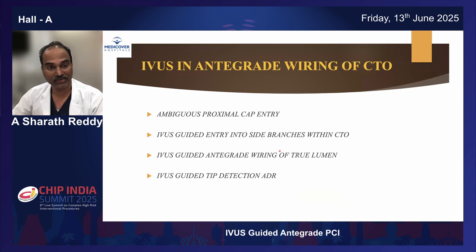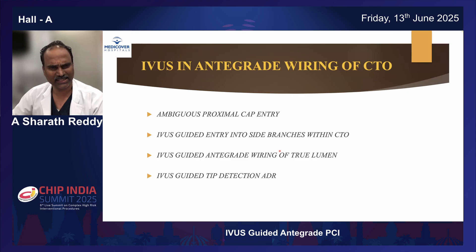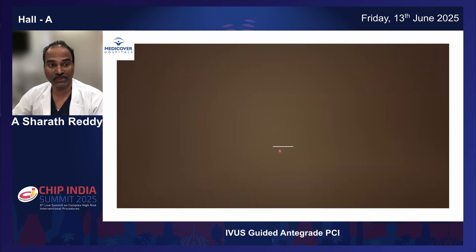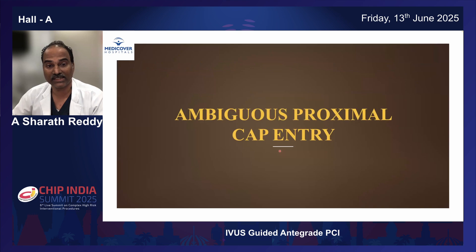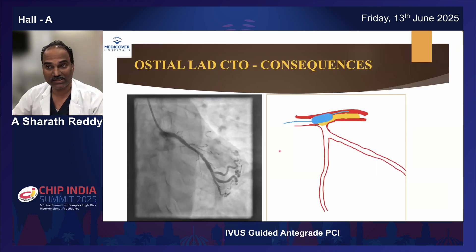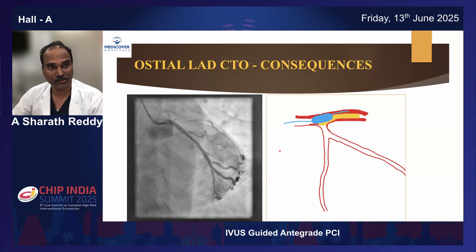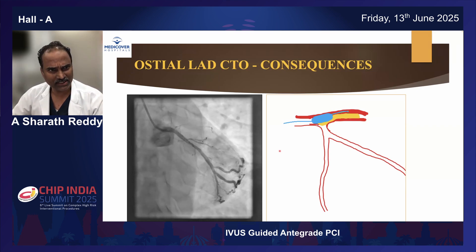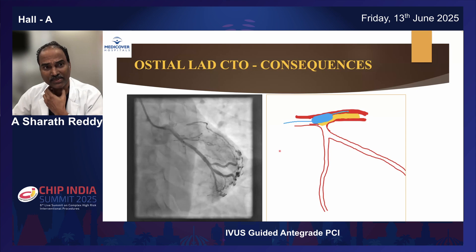Being a follower of eastern CTO methodologies, I also use more of IUS in antegrade wiring of CTOs. These are the areas where we can use it: ambiguous proximal cap entry, IUS-guided entry into side branches within the CTO, IUS-guided antegrade wiring of true lumen, and IUS-guided tip detection ADR. Coming to proximal cap entry - IUS-guided proximal cap entry.